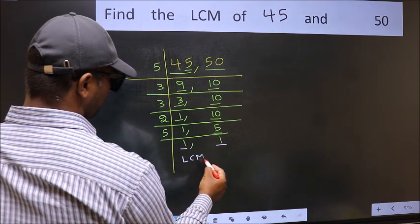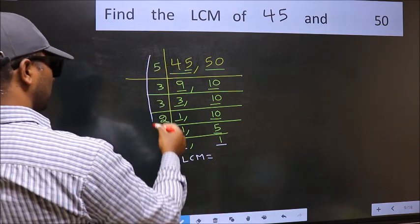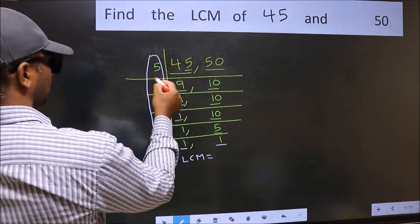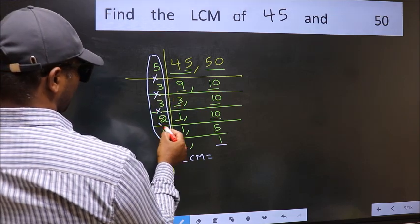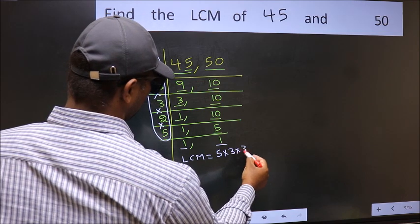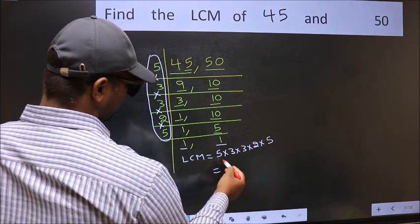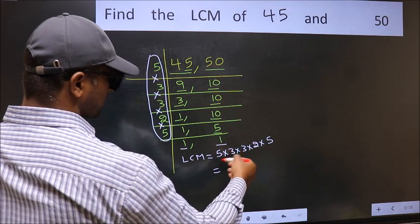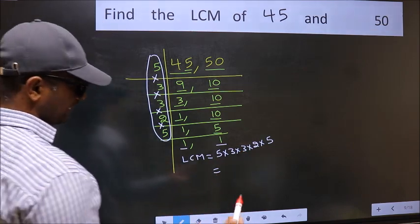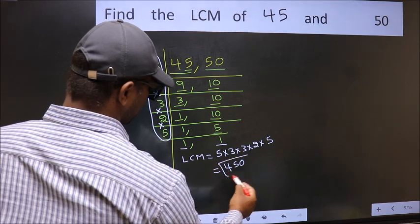Our LCM is the product of these numbers: 5 × 3 × 3 × 2 × 5. When we multiply these numbers, we get 450, which is our LCM.